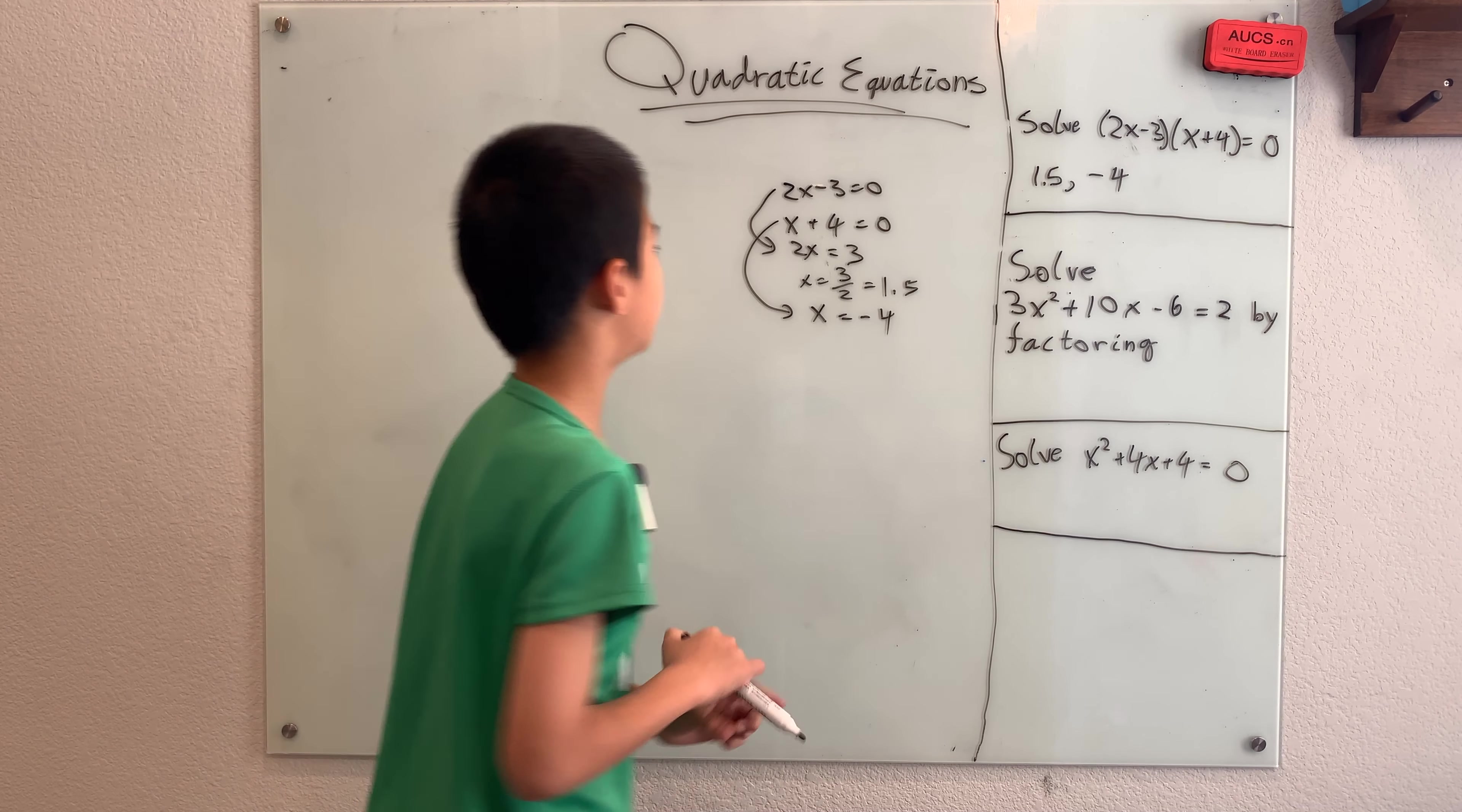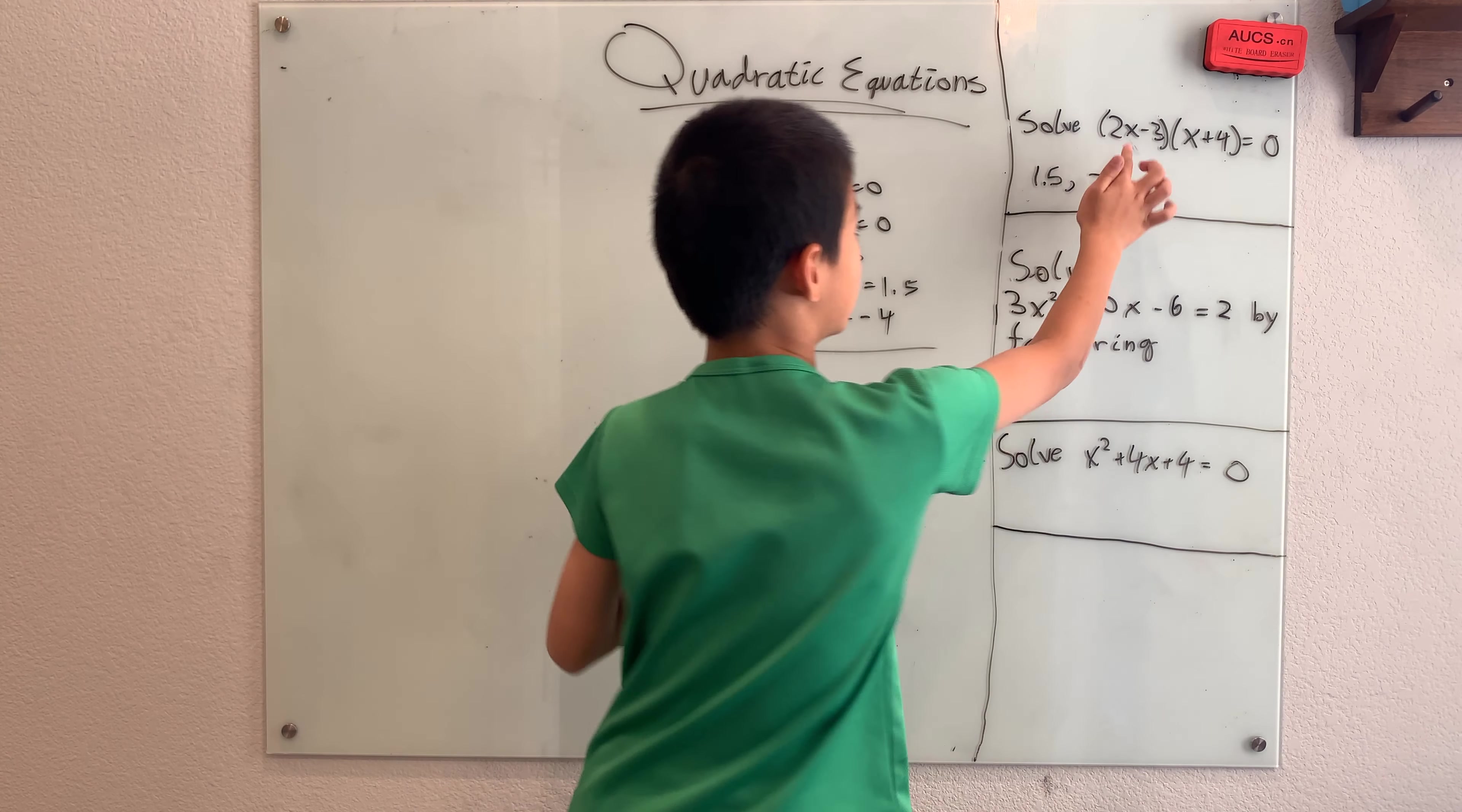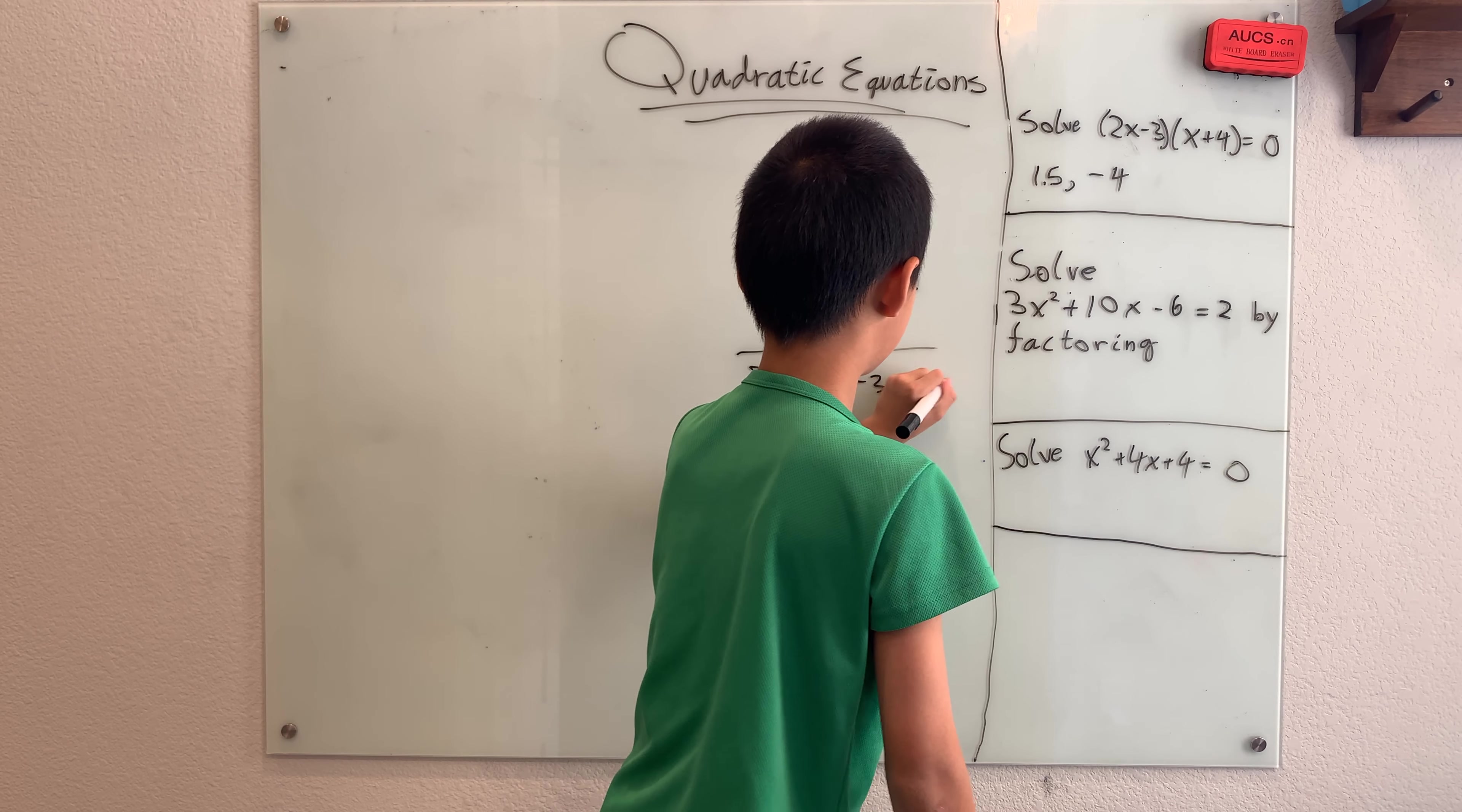So the answers to this are just 1.5 and negative 4. Now, that's not the answers I'm worried about, but instead, how does this have a tie with quadratic equations? Well, to look at that, let's actually factor out this expression. So 2x times x is 2x squared. 2x times 4 is 8x. Negative 3 times x is minus 3x.